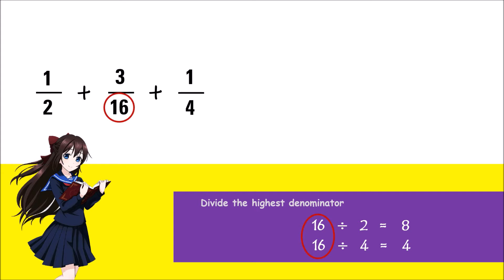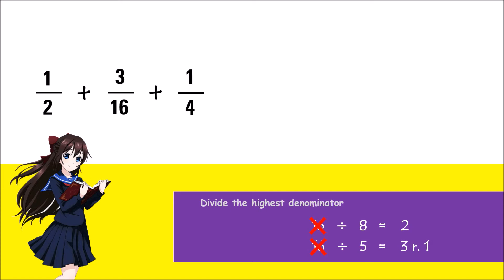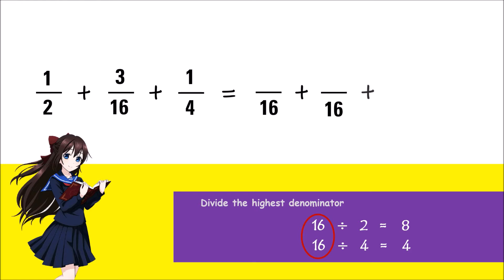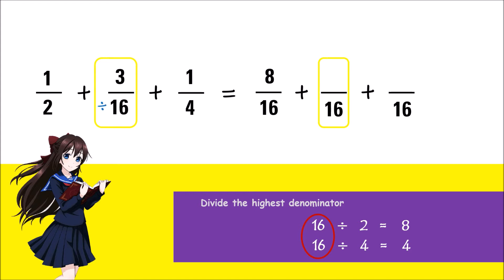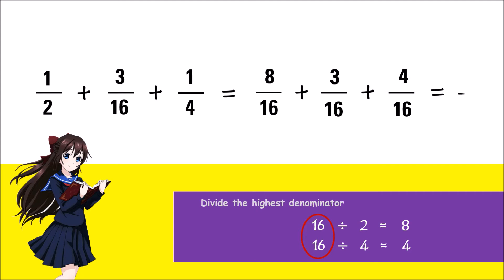However, if one of them has a remainder of 1 or more, then we can't take the highest denominator as our LCM. For example, 16 divided by 8 is 2, but 16 divided by 5 is 3 remainder 1 — in this case, 16 is not the LCM of the given denominators. Now going back, let's rewrite our fractions using this LCM, then add. As a result, the answer is 15 sixteenths.